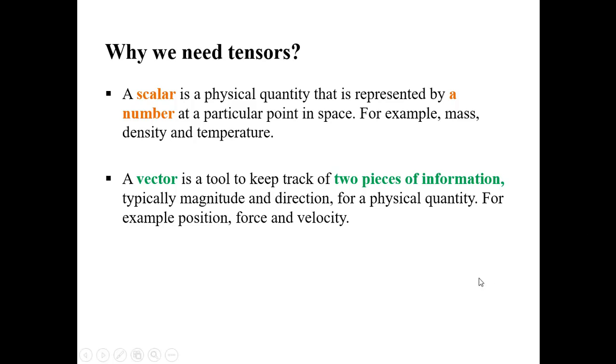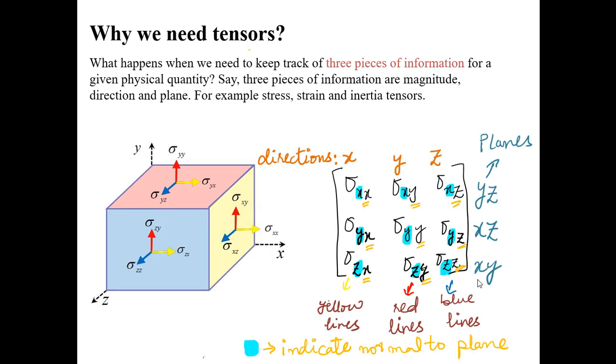What happens when we need to keep track of three pieces of information for a given physical quantity? Just imagine if we categorize the physical quantities in three categories. We say that these three pieces of information are magnitude, direction and plane. This is where tensors concept comes in, to combine this kind of information mathematically. Basically, the term you use is tensors.